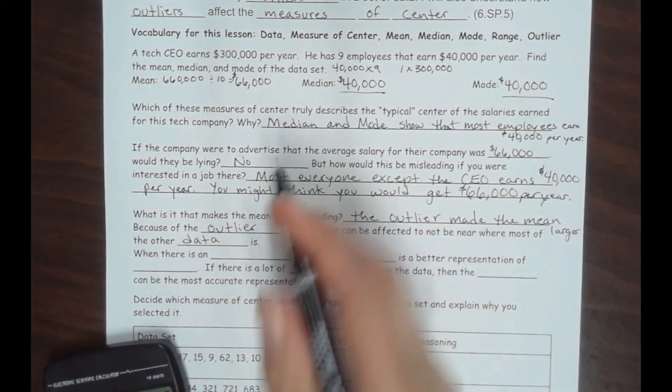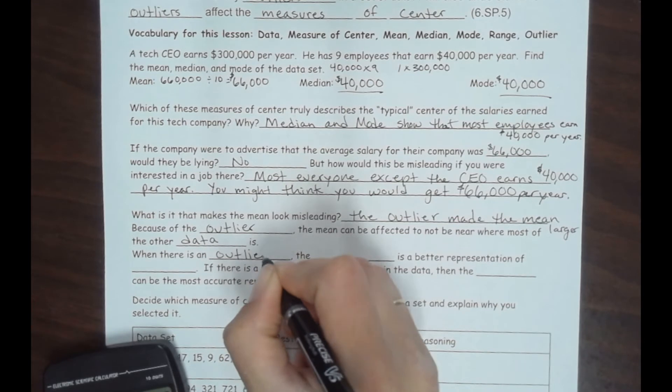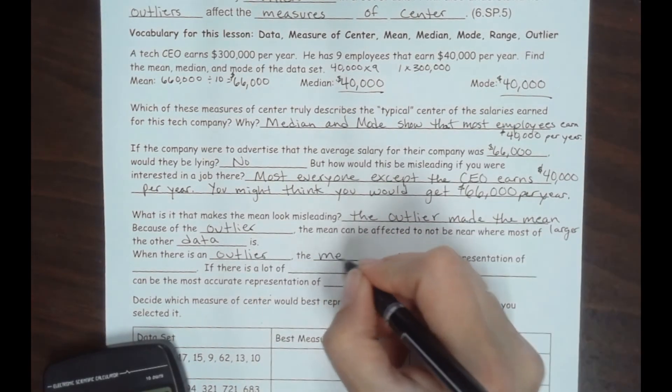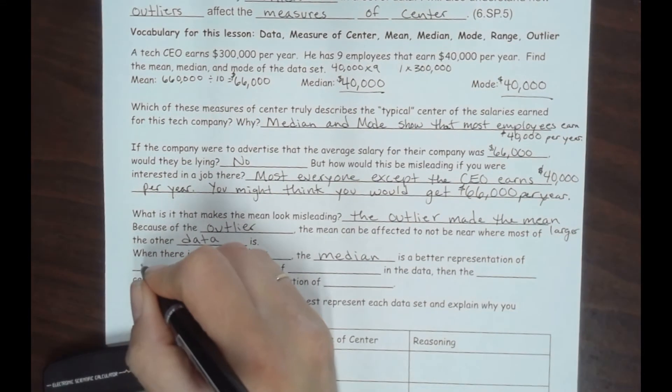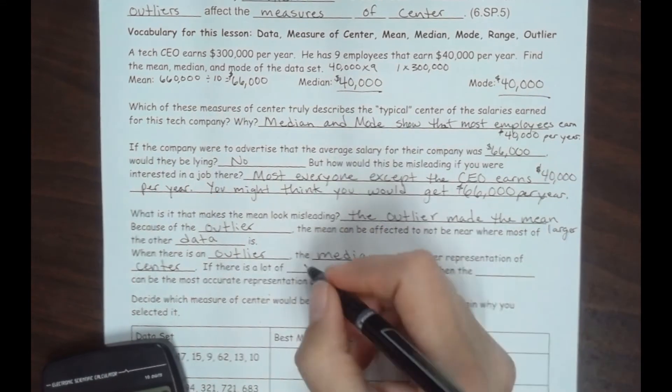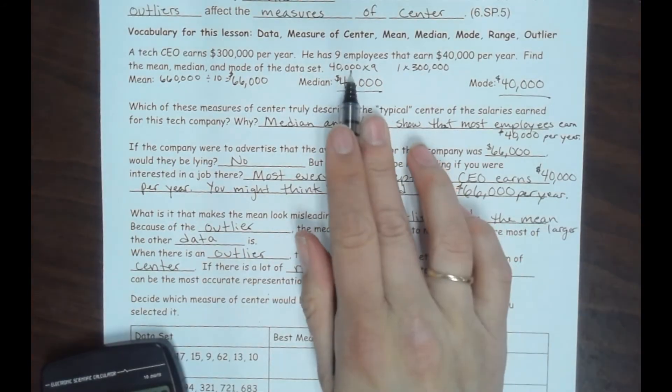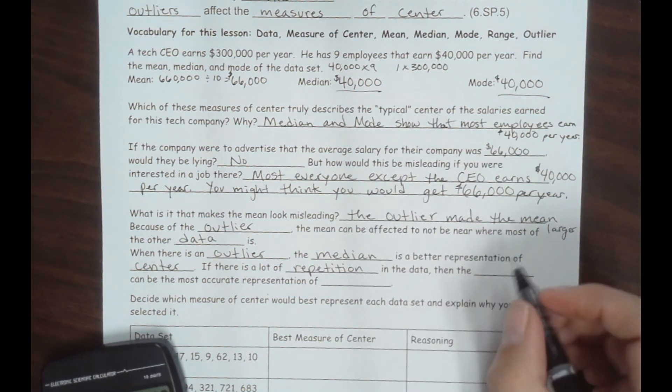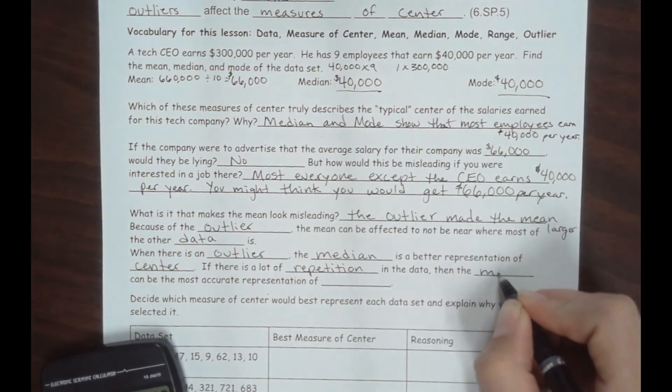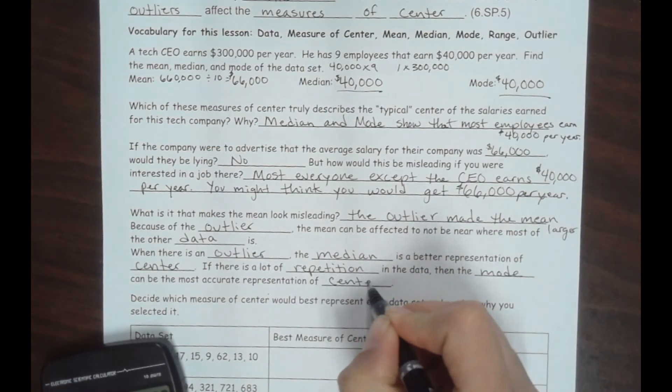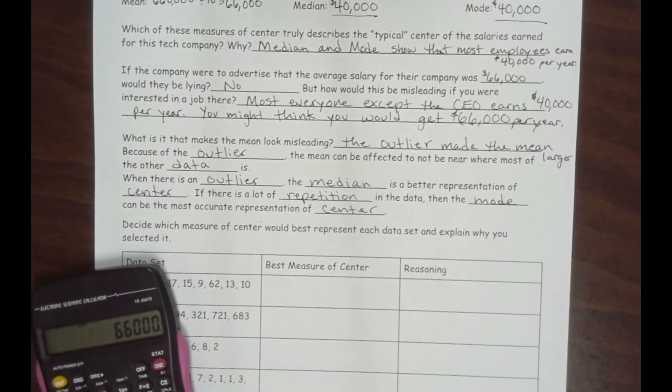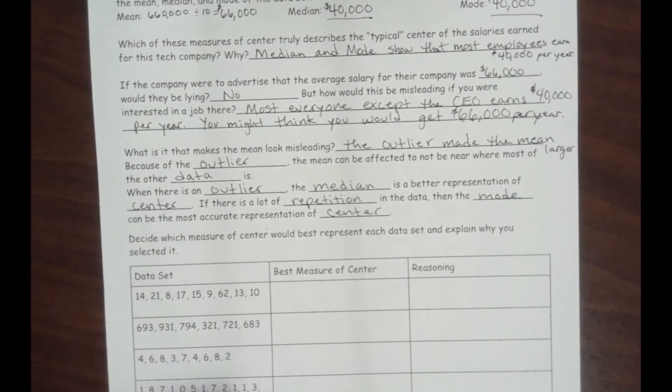So I want you to know that when there is an outlier, the median is a better choice, is a better representation of the center. If there is a lot of repetition in the data, which in this case there also was, right? We had a lot of repetition. Everybody else's salary was $40,000. If there's a lot of repetition in the data, then the mode may be the most accurate representation of where the center is. So I want you to be able to know what outliers do and which measure of center would be best. Now, the mean is the most common one we use if there's no outlier and not a lot of repetition in one area. The mean is probably the best one for us to use.